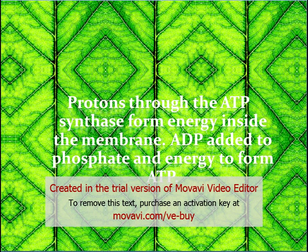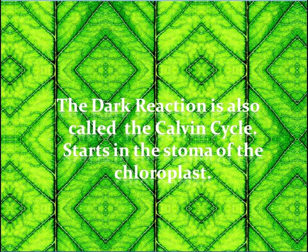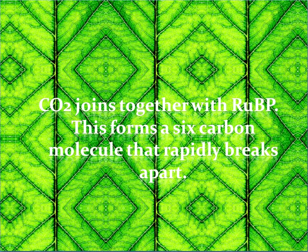The dark reaction is also called the Calvin Cycle, and starts in the stroma of the chloroplast. CO2 joins together with RUBP, forming a 6-carbon molecule that rapidly breaks apart.